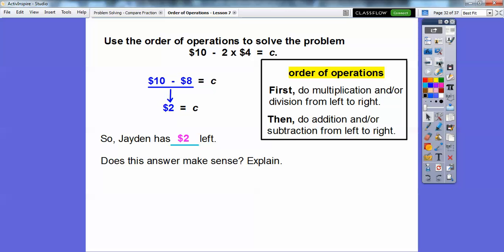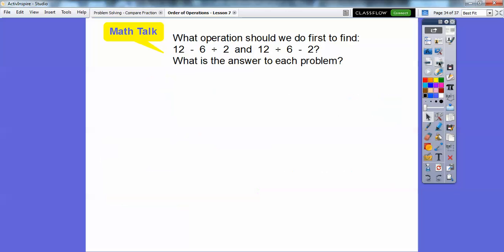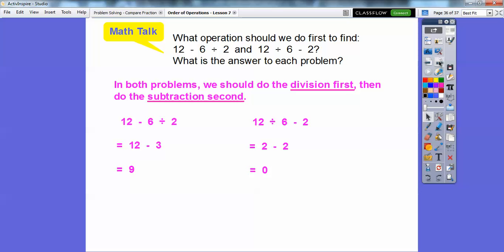Does that answer make sense and explain? Well, yes. If we work backwards, she bought 2 shirts for $4 each, and 2 × 4 is $8 that she spent. So if we take that $8 and add $2 that she has left over, that gives her her $10 that she started with. So which operation should we do first in both of these problems right here? And then write the answer to each problem. 12 - 6 ÷ 2, I got to do this division first right here, and then I'll do the subtraction second. Over here, 12 ÷ 6 - 2, I got to do this division first right here, and then do the subtraction second. So on both problems, we should do the division first, then do the subtraction afterwards.